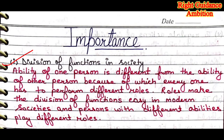Next step is importance. First point is: division of functions in society. The ability of one person is different from the ability of another, because of which every person has to perform different roles. In society, every person has a different ability, and based on that ability, we decide the role of the person. Roles make the division of functions easy in modern society, so everyone does a good function according to their ability without causing chaos or confusion.